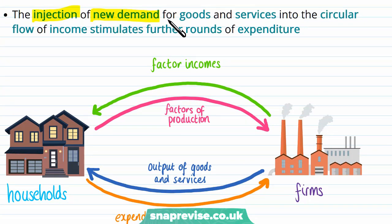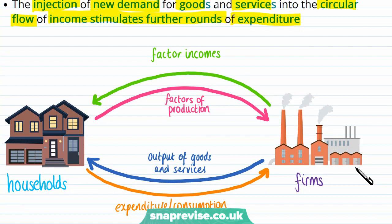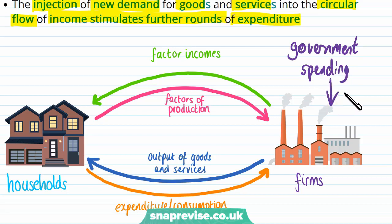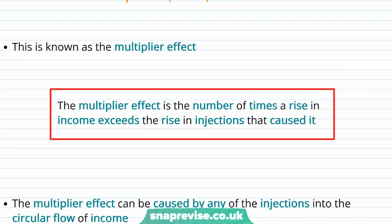The injection of new demand for goods and services into the circular flow of income stimulates further rounds of expenditure. One part of our circular flow of income is the expenditure or consumption of goods and services produced by our firms. Because of the injection of government spending going towards firms, they are employing households' factors of production — the labor — and paying wages back. Firms are increasing the output of goods and services, and households are now spending more. Because they're spending and consuming more, firms are producing more goods and services, and this keeps going back and forth as more output is produced. This roll-on effect from the initial injection by the government is known as the multiplier effect — the number of times a rise in income exceeds the rise in injections that caused it.